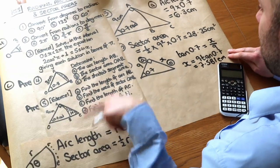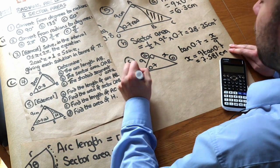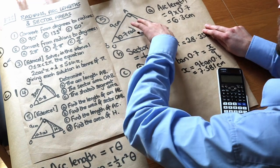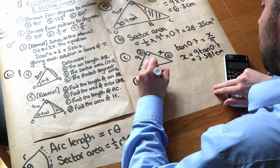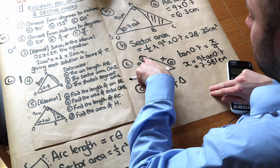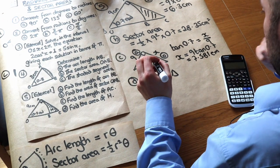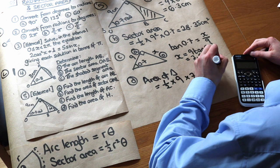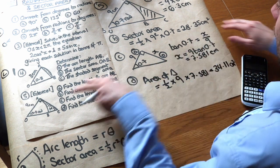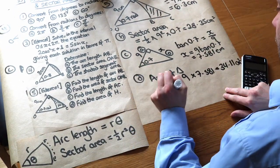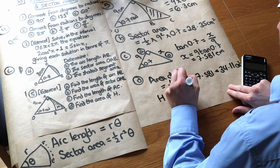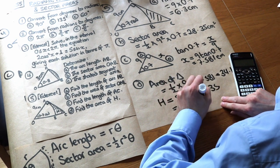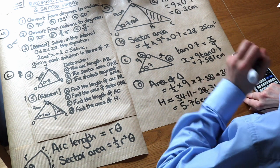Finally, find the area of the shaded region. We take the triangle area and subtract the sector. Since it's a right-angled triangle with base 9 and height 7.581: triangle area = ½ × 9 × 7.581 = 34.11 cm². Shaded area = triangle − sector = 34.11 − 28.35 = 5.76 cm² to three significant figures. And we are done.